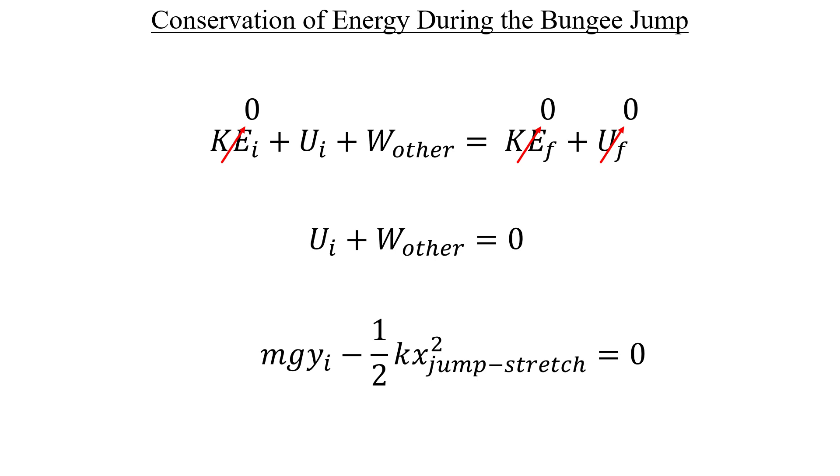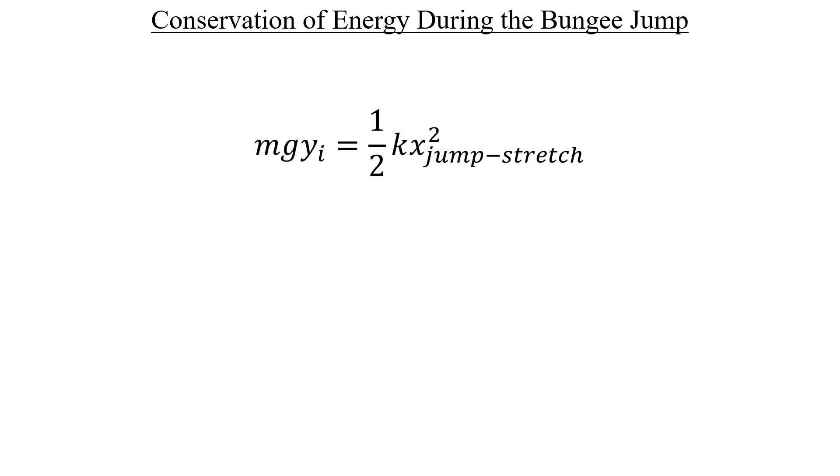We can move the work term over to the right-hand side to make it positive, multiply both sides by 2, then divide both sides by the square of the jump stretch distance to get an expression for the spring constant.